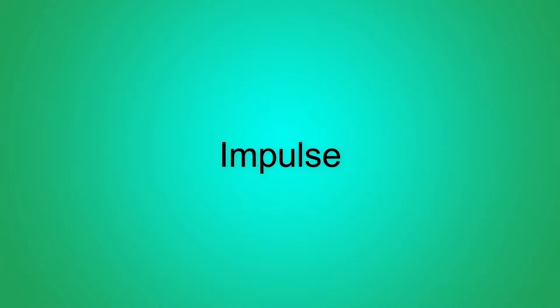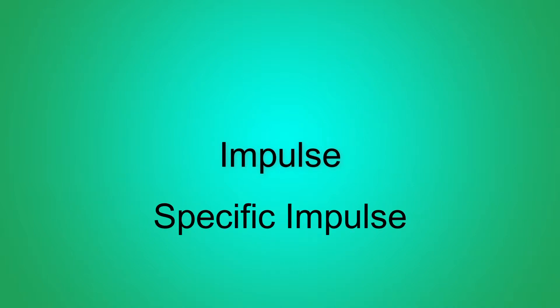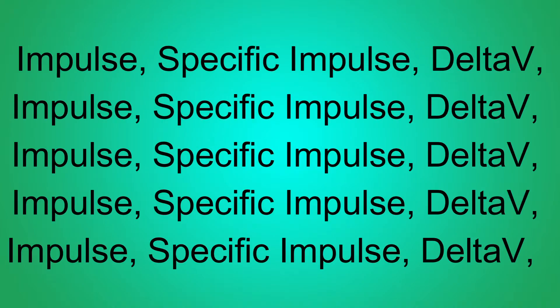When it comes to spaceflight, the words impulse, specific impulse, and delta V are terms thrown around a lot. They all are used to quantify spacecraft performance, but they all mean different things. Today I answer what these words mean, and what exactly they quantify.